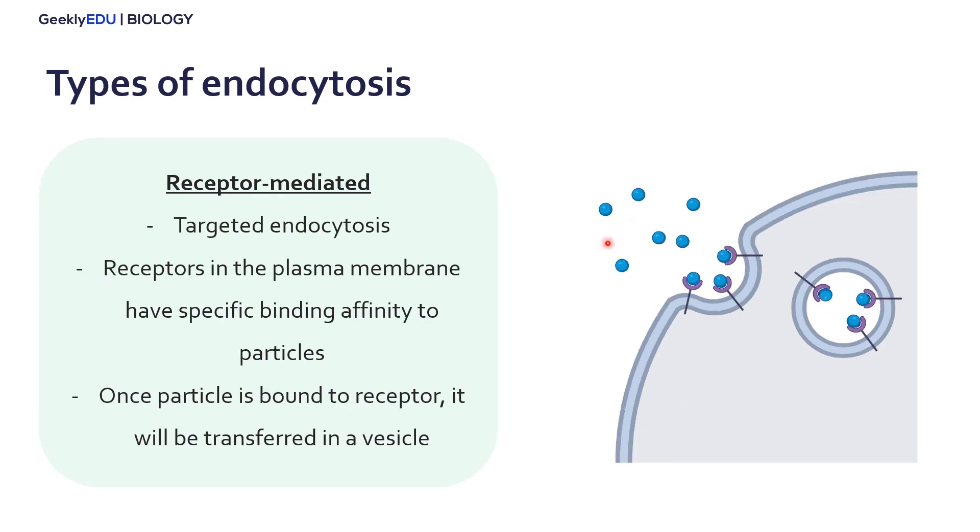Finally, we have the third type of endocytosis: receptor-mediated endocytosis. Unlike the other two types which allow any molecule to come into the cell, this is targeted - only allowing certain molecules. These molecules must be recognized by special receptors in the plasma membrane which are very specific to bind to only certain particles.